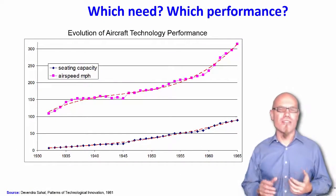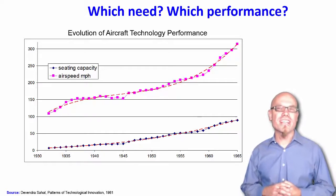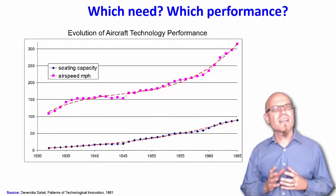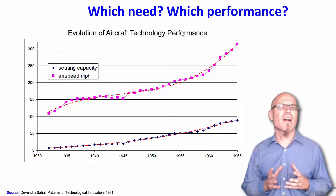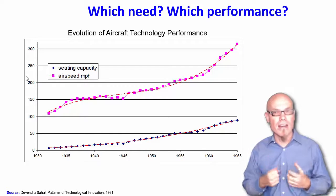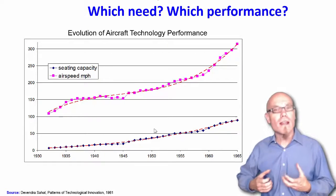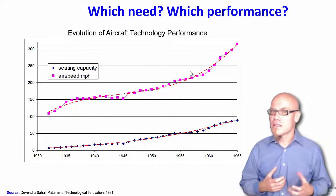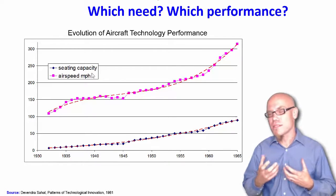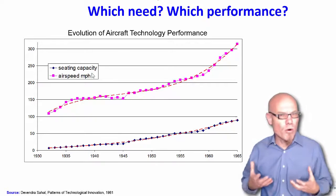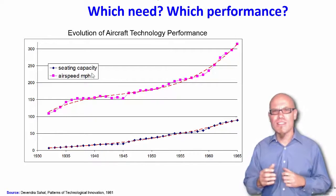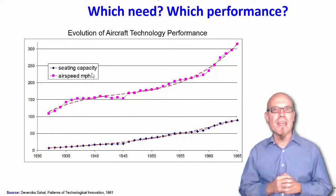Let's look at a different example: aircraft technology performance. When analyzing the evolution of technology we always have to ask what performance we're talking about — basically, what is the typical need we try to address. An aircraft can carry a lot of people or it can be very fast, and there may be a trade-off. Engineers must consider whether we need to transport many people or get from A to B very fast. Let's look at two trajectories: seating capacity and airspeed.